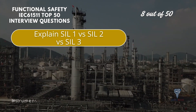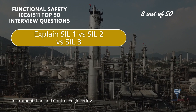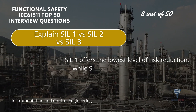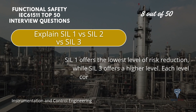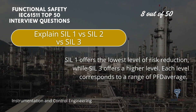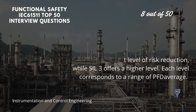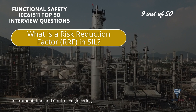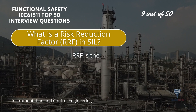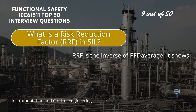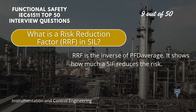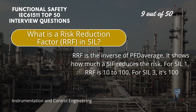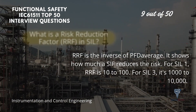SIL 1 offers the lowest level of risk reduction, while SIL 3 offers a higher level. Each level corresponds to a range of PFD average. The risk reduction factor, RRF, is the inverse of PFD average and shows how much a SIF reduces the risk. For SIL 1, RRF is 10 to 100. For SIL 3, it is 1,000 to 10,000.